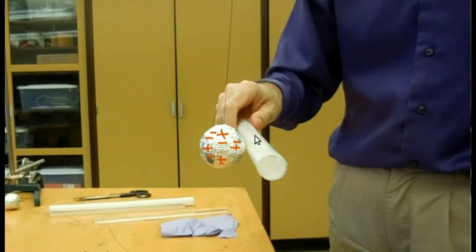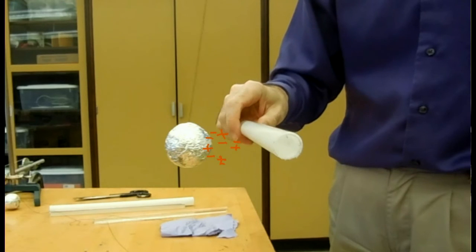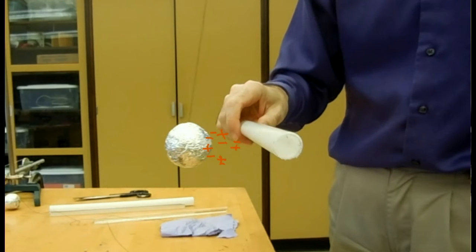However, as I rotate the rod, as you'll see me do, I bring new charged parts of it in contact with the ball, and more charge gets transferred to the ball, and again the ball is repelled.